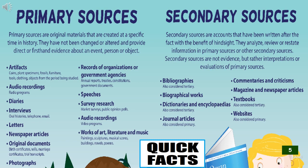On the other hand, secondary sources are accounts that have been written after the fact with the benefit of hindsight. They analyze, review, or restate information in primary sources or other secondary sources. Secondary sources are not evidence, but rather interpretations or evaluations of primary sources. Examples of these are bibliographies, biographical works, dictionaries and encyclopedias, journal articles, commentaries and criticisms, magazine and newspaper articles, textbooks, and websites.